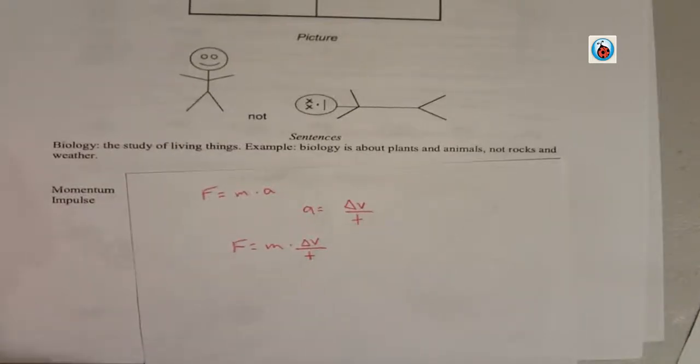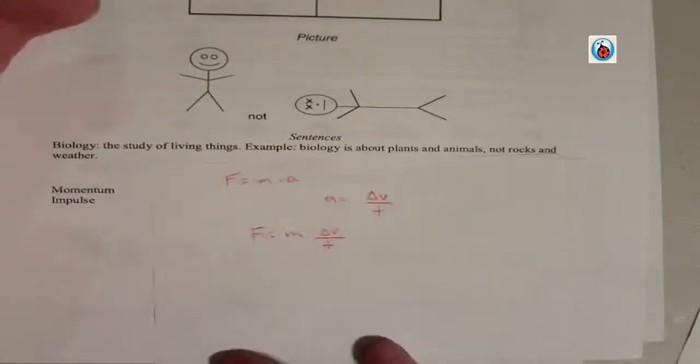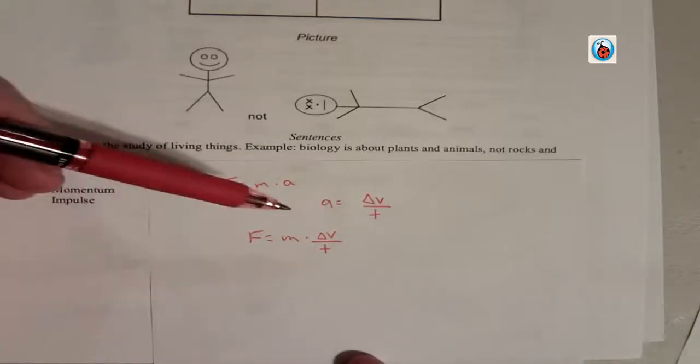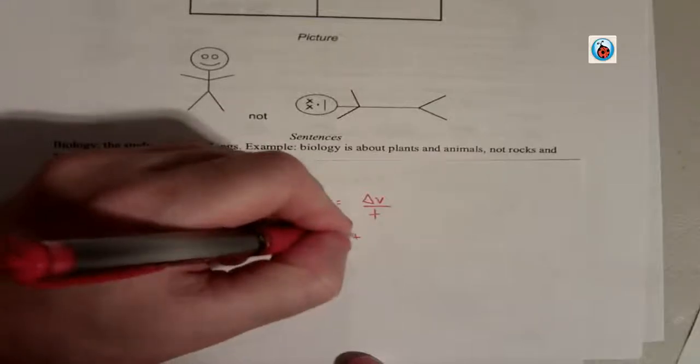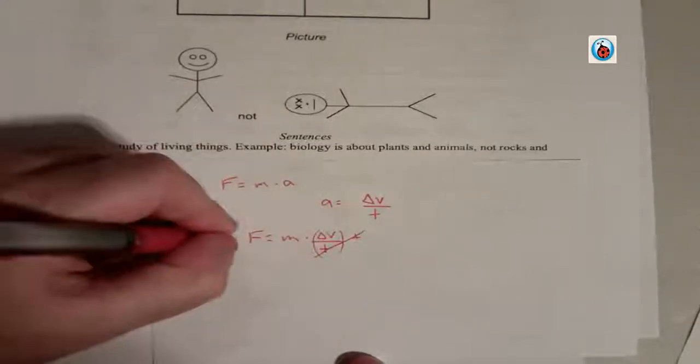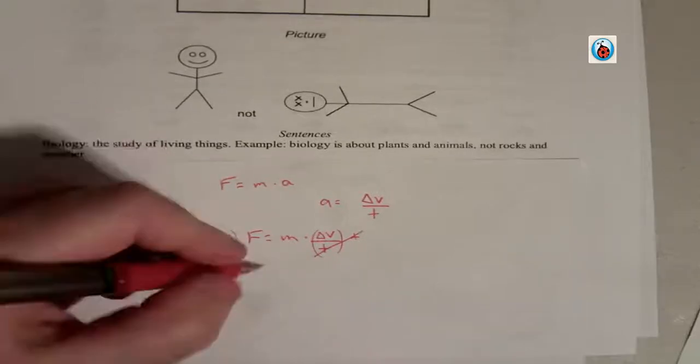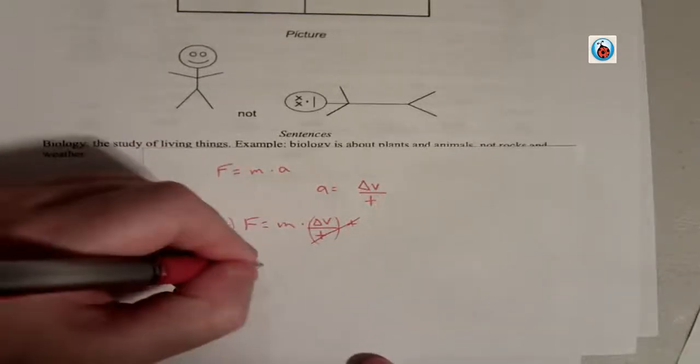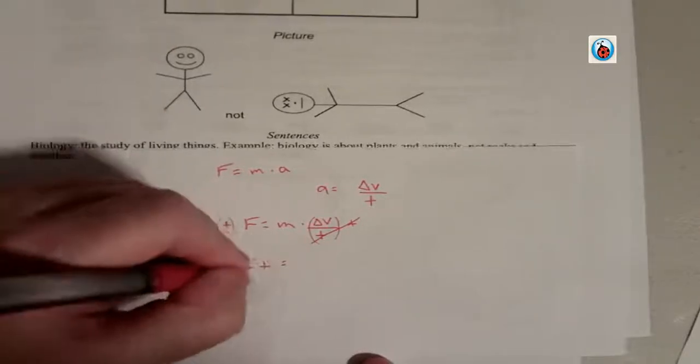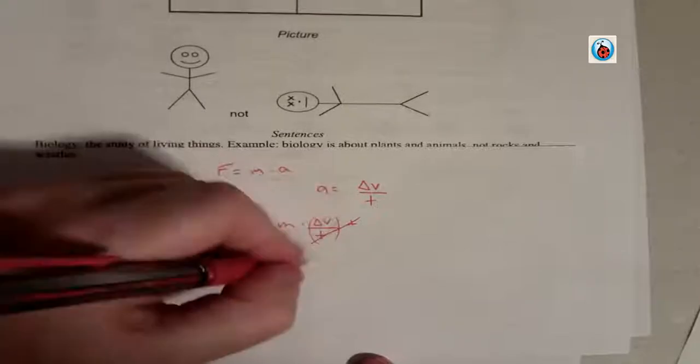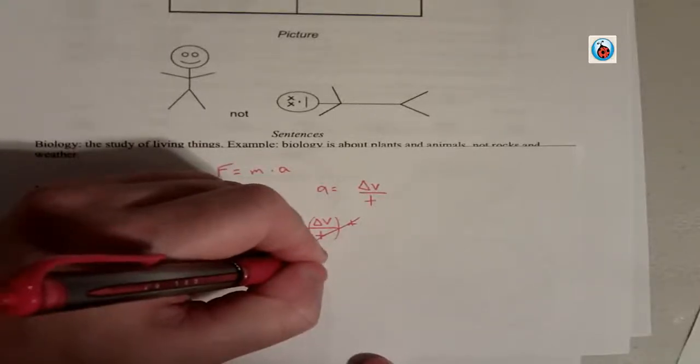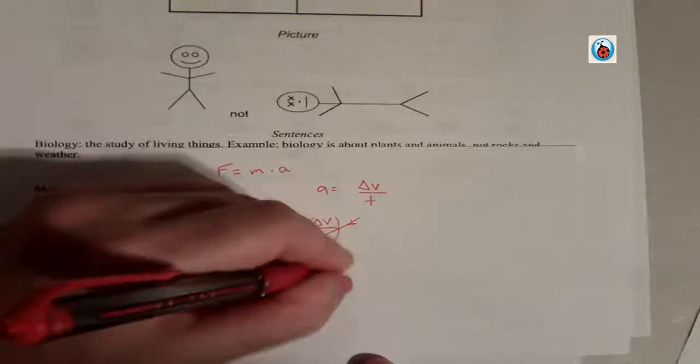Now, hopefully, it's starting to look familiar. So, now, what if we want to get rid of this time on the bottom? Well, we know you multiply by time. Bam! Gone! Which means you multiply by time. So, now you have force times time equals mass times the change in velocity.